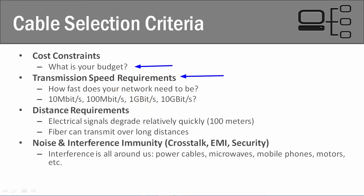The third criteria is going to be your distance requirement, and again we're thinking about both currently and in the future. We really only have two different options: twisted pair and fiber. We need to determine how big our network is going to be and where we need to put one type versus another. Don't always think you have to go with just twisted pair or just fiber — you can do a combination of both. You need to determine in what areas twisted pair will work because it's more affordable and economical, and what areas will require fiber. If you can get away with just twisted pair altogether, that may be fine as well.